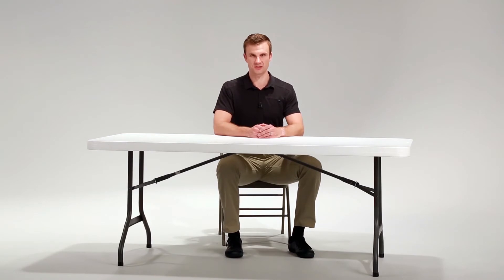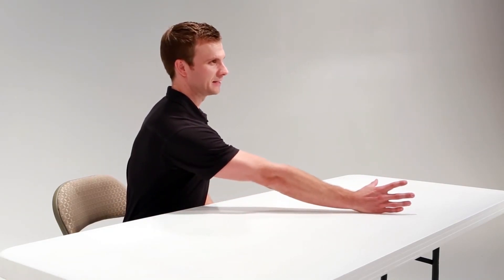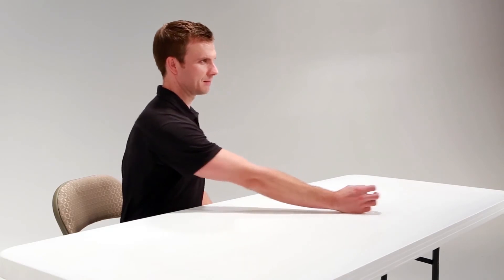To perform this exercise you're going to sit in a chair at a table. Your affected arm is going to be resting on the table. Your shoulder blade is going to be down and back, and from this position you're going to reach out like you're grasping an imaginary object and bring it back in.